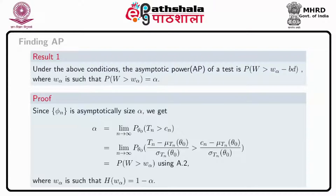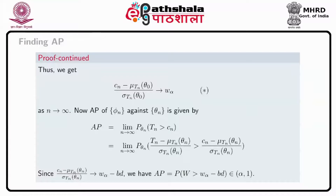Proof: Since phi_n is asymptotically size alpha, we get alpha equal to the limit as n tends to infinity of the probability under theta naught of T_n greater than C_n, which after some manipulation using assumption A1 gives probability that W greater than w_alpha, where w_alpha is such that H(w_alpha) equals 1 minus alpha. Thus we get C_n minus mu(T_n, theta naught) divided by sigma(T_n, theta naught) tending to w_alpha as n tends to infinity.